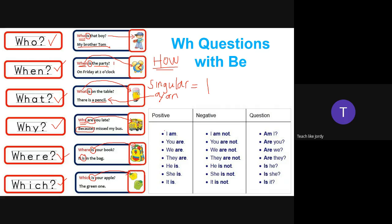We already studied this last week, but let's review it. The subjects are: I, you, we, they, he, she, it. Now for 'to be': 'am' is only for 'I' — I am. 'Are' is for you, we, and they. 'Is' is for he, she, and it. These are the to-be forms for positive sentences.